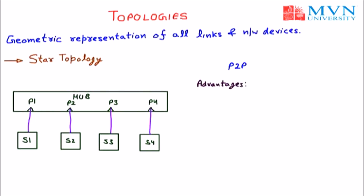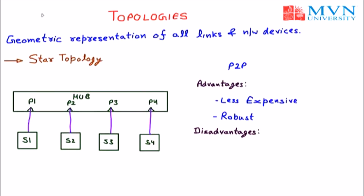The main advantage of star topology is that it is less expensive — we only need computers, a hub, and wires. It is also robust, meaning it can handle faults very easily. The main disadvantage is that it is dependent on a single point — all systems S1, S2, S3, and S4 depend on the single hub, so if the hub fails, the entire network fails.